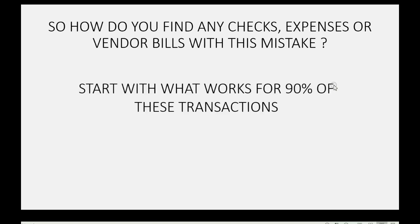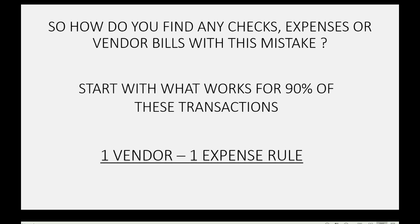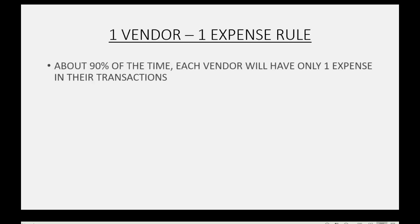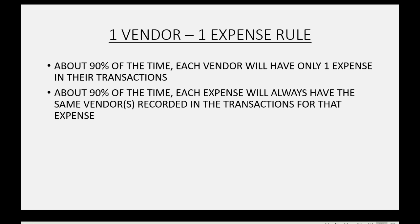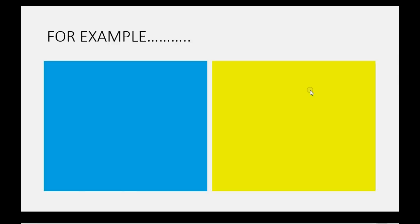So, how do you find any checks, expenses, or vendor bills with this mistake? Well, we start with what works for 90% of these transactions. It's called the One Vendor, One Expense Rule. This rule asserts that about 90% of the time, each vendor will have only one expense in their transactions. Conversely, about 90% of the time, each expense will always have the same vendor or vendors recorded in the transactions for that expense.